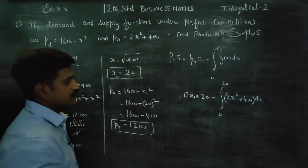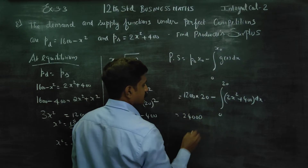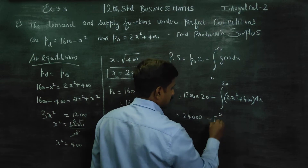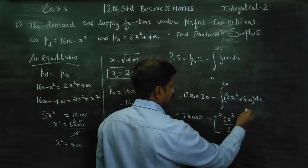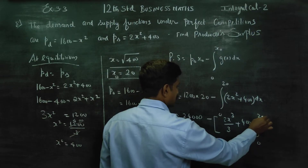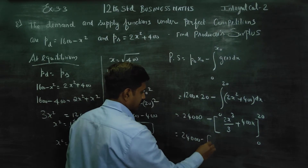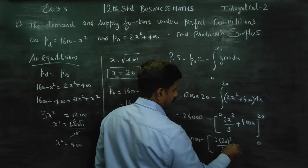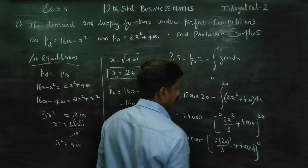Substituting into the producer surplus formula using the supply function. The upper limit is 20, so we evaluate: 2 times 20 cubed divided by 3 plus 400 times 20, minus the value at the lower limit 0.